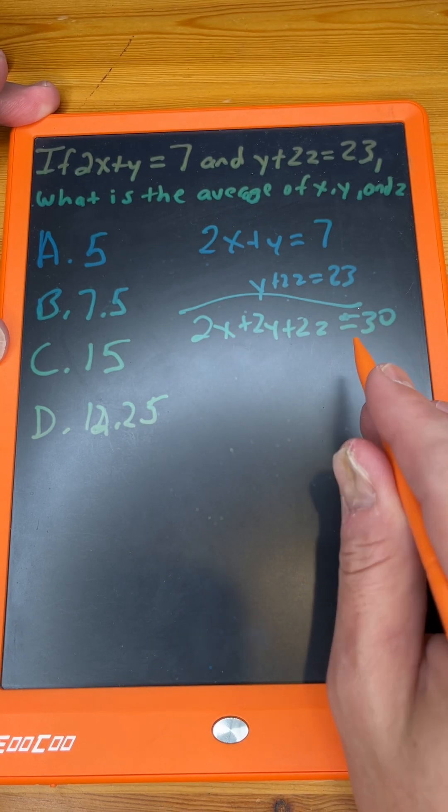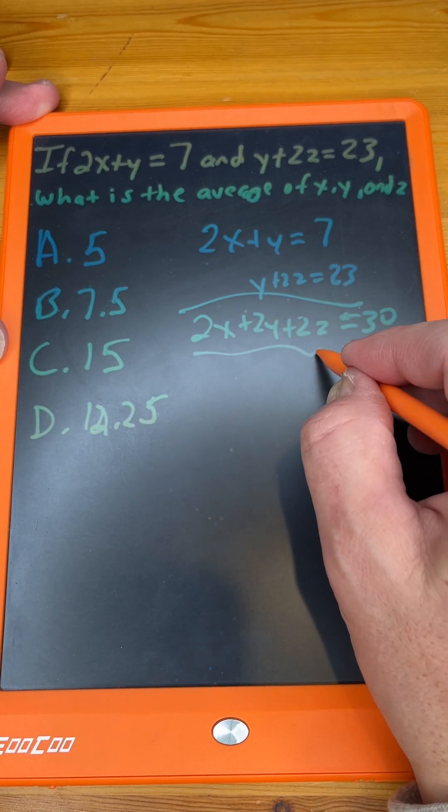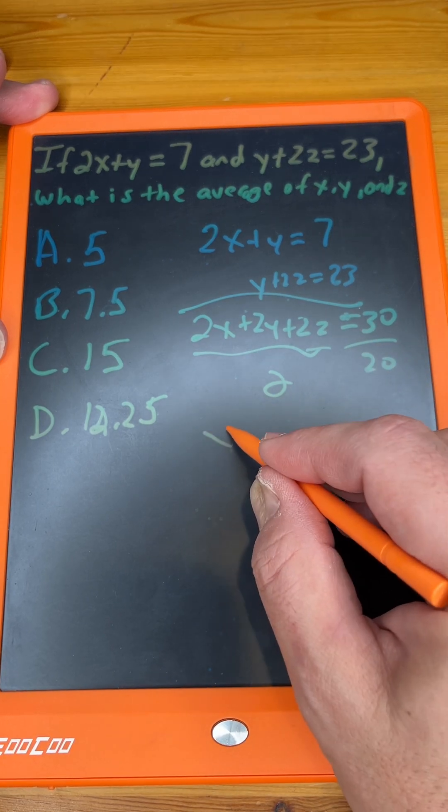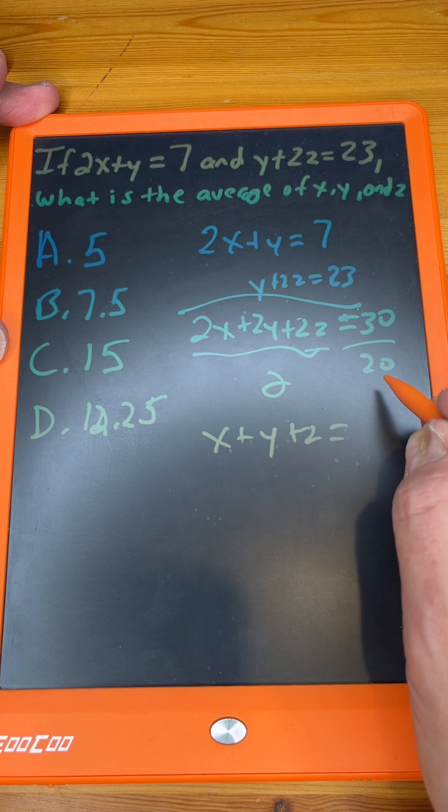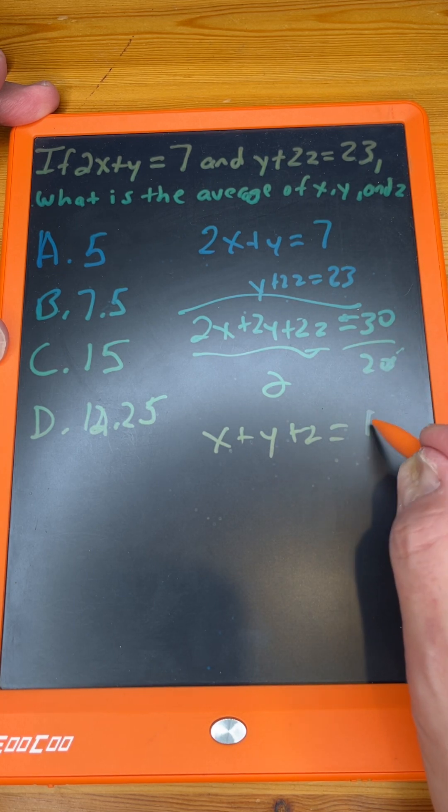We can pull a 2 out of all this, so let's simplify it. We'll divide all this by 2, and we got x plus y plus z equals 15.